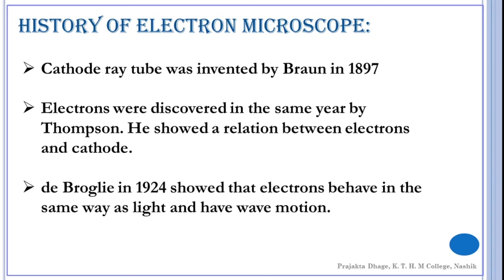The cathode ray tube was first invented by Braun in 1897. Later, electrons were discovered in the same year by Thomson. He showed a relationship of the electrons to the cathode ray tube. It was de Broglie in 1924 who showed that electrons behave in the same way as light and have wave motion.